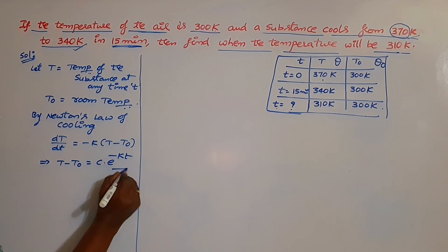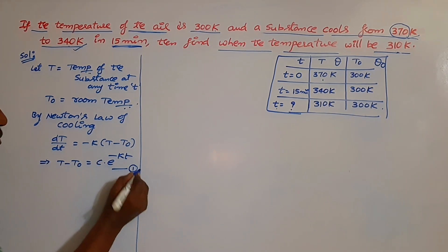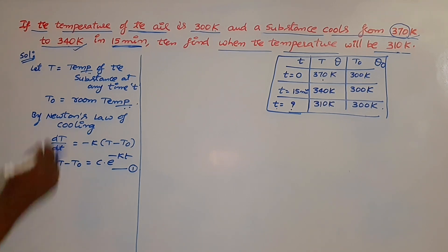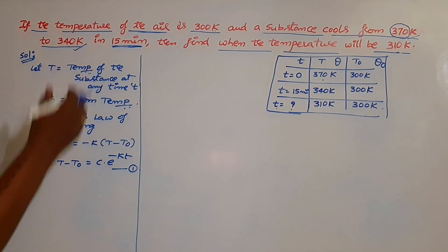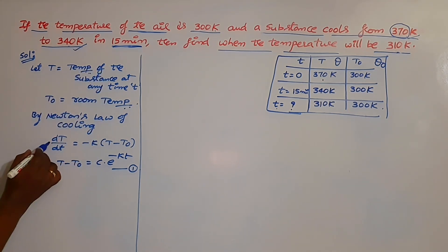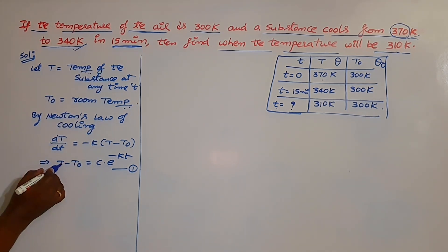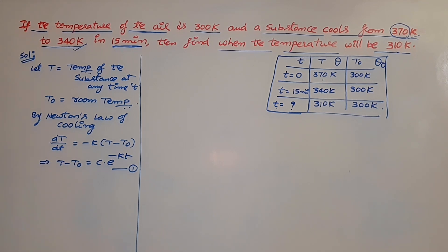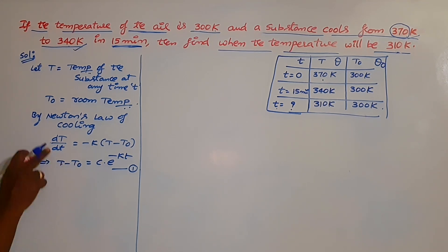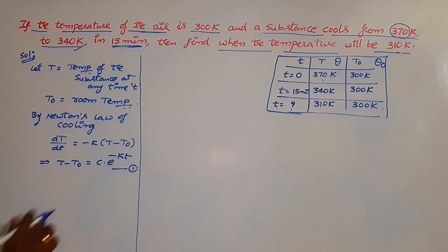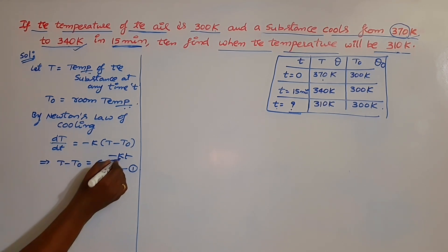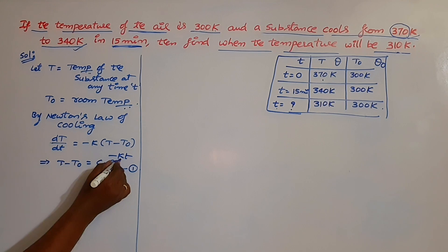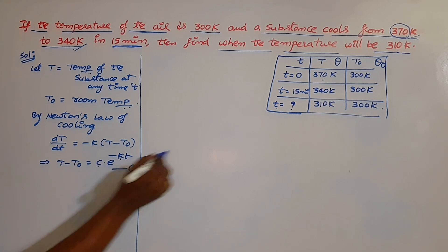By Newton's Law of Cooling, the differential equation is dT/dt = −K(T − T₀). Using separation of variables, the general solution is: T − T₀ = C · e^(−Kt). This result comes from Newton's Law of Cooling. For the proof, you can refer to the previous video. Now we need to find C value and K value.